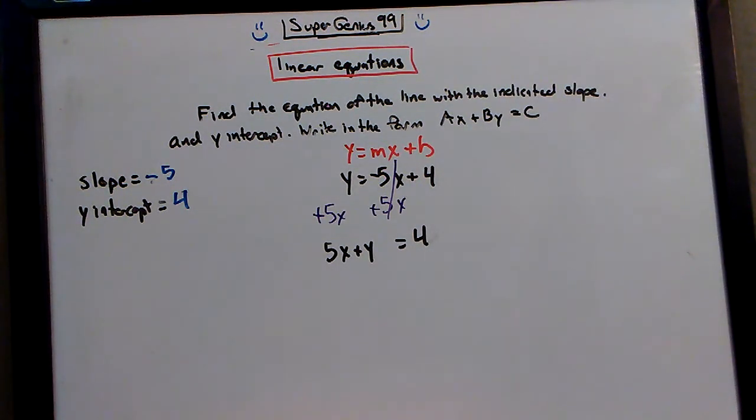And so you have 5x plus y is equal to 4. And there you go. Pretty simple, right?